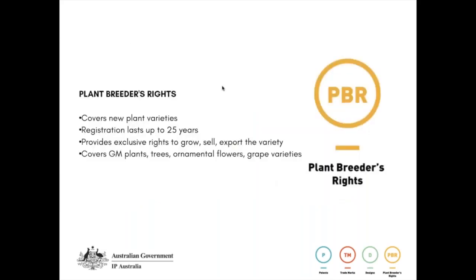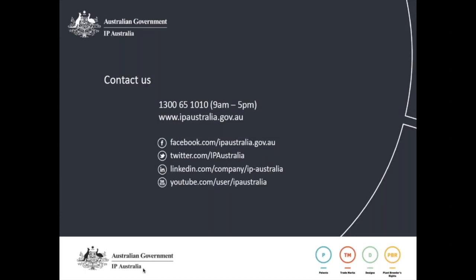The last IP right to cover briefly is plant breeders rights. It's a very specific IP right, and those in the horticultural industry generally have access to qualified professionals to support applications. Like an invention, if you come up with a new plant variety, you can come to IP Australia and seek ownership for 25 years. It provides an exclusive right to grow, sell, and export that plant variety, and you can make money through royalties or direct sales. It covers a variety of GM plants, trees, flowers, fruit, and grape varieties — so it's quite used in the wine industry as well.